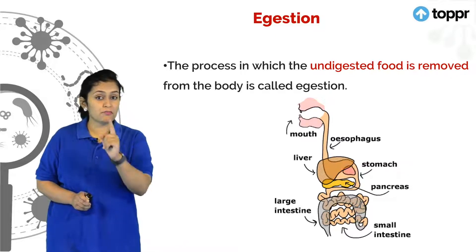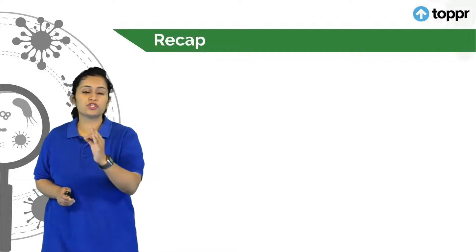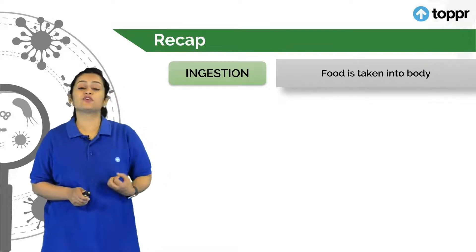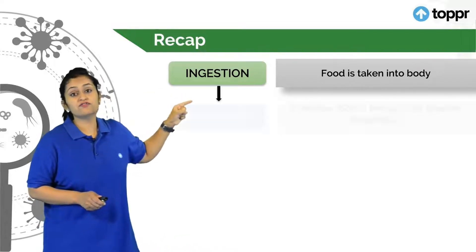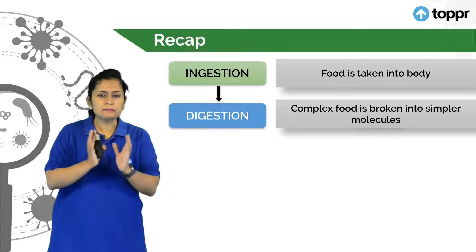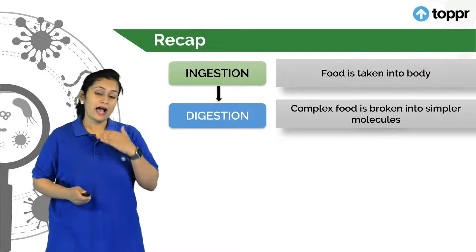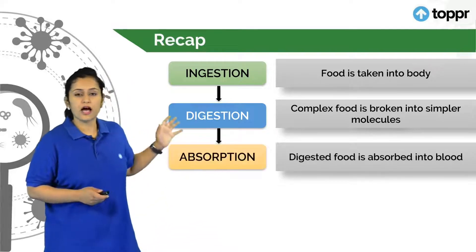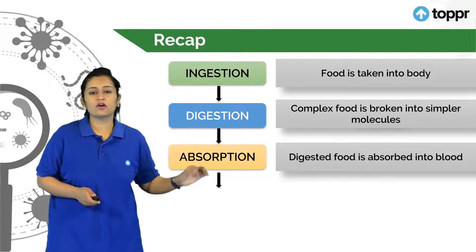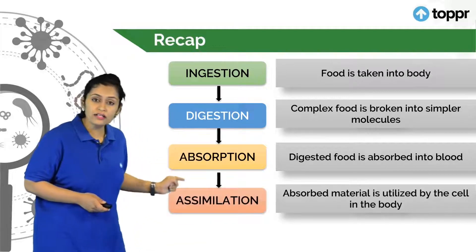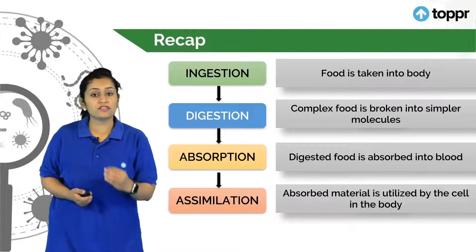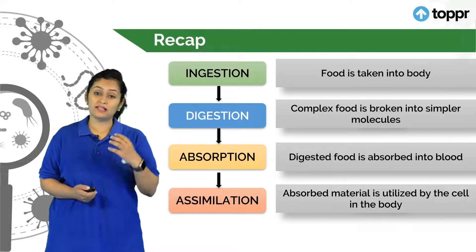So that's all about the process of nutrition, but before leaving let's recap. The process of nutrition has five steps: ingestion, where food is taken into our body; digestion, where complex food is broken down into simpler molecules so that we can utilise it; absorption, where we absorb the digested food from the intestinal wall into the bloodstream; and assimilation, where the bloodstream passes all food material to each and every cell where it is utilised. Assimilation is the utilization of absorbed and digested food for energy generation and maintenance of our body and cells.